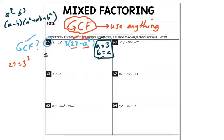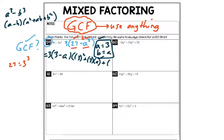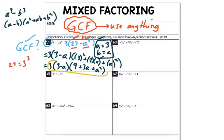Here we go. This would factor — and notice the 3 is going to stay on the outside the whole time as a GCF. The formula says a minus b, that would be (3 minus a). The next part is a squared plus a times b plus b squared, which simplifies to: 3 on the outside, (3 minus a), and inside: 9 plus 3a plus a squared. And that's the answer for number 59. We did a GCF check first, and what was left after the GCF was a difference of cubes.